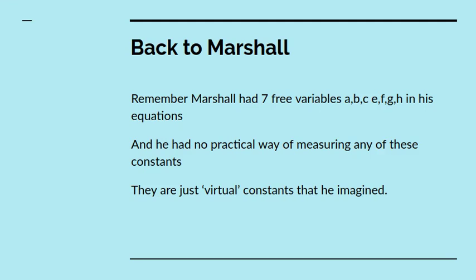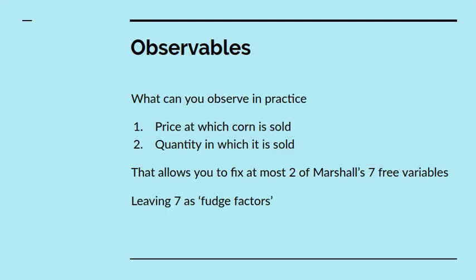Now let's go back to Marshall. Marshall's got his seven free variables, but he has no practical way of measuring any of these constants. They're just virtual constants that he's imagined. What can you observe in practice? All you can observe is that at the Winchester market so many tons of corn were sold and that it was sold for say three shillings and sixpence a bushel. This allows you to fix at most two of seven free variables. If you've got two observables, an equation with seven variables, you've only got two constraints and that leaves 5 as a fudge factor.